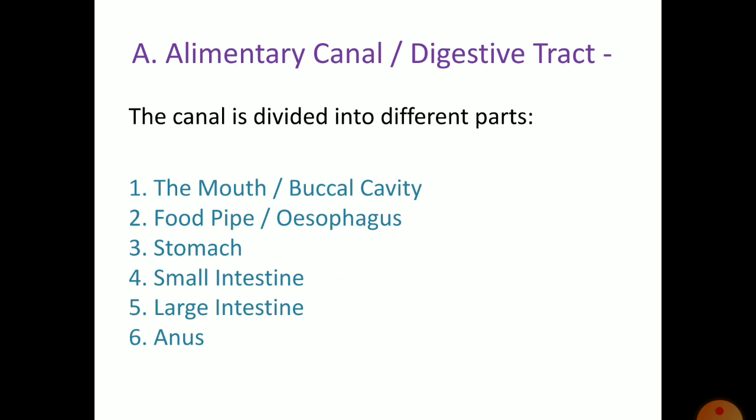The alimentary canal or digestive tract is divided into different parts. First, the mouth, also known as the buccal cavity. Second, the food pipe, also known as the esophagus.